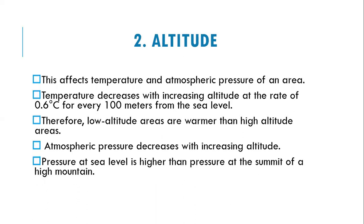Moving on, the second factor is altitude. This factor affects the temperature and atmospheric pressure of an area. Temperature decreases with increasing altitude at a rate of 6.4 degrees per 1000 meters from sea level. Therefore, lower altitude areas will be warmer than higher altitude areas.